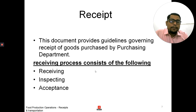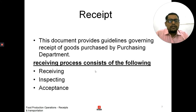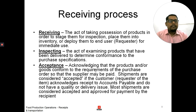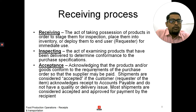The next point is receipts. This document provides guidelines for the receiving of goods purchased by the purchasing department. The purchase department is the department which looks after each and every purchase. The receiving procedure consists of three steps: first is receiving, second is inspecting, and third is acceptance. Receiving is the act of taking possession of products in order to save them for inspection, place them into inventory, or deploy them to end use for immediate use.